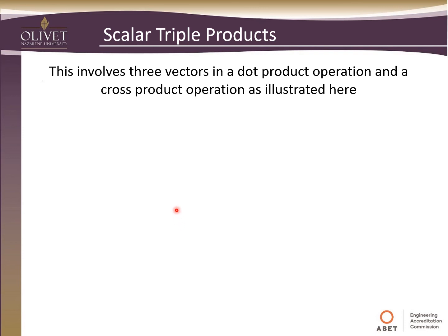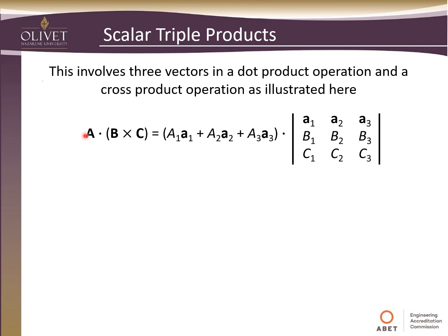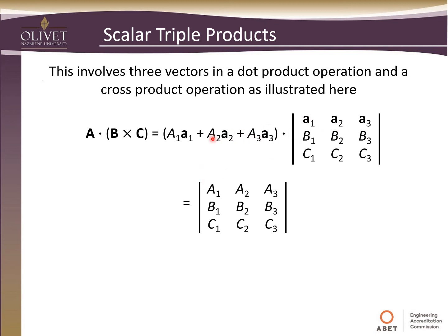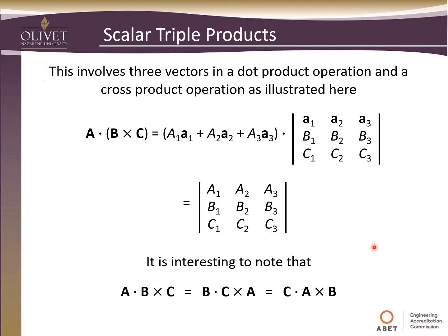Finally, we want to look at the scalar triple product, which involves three vectors in a dot product and a cross product operation: A dot (B cross C). We can write B cross C as a determinant array, and then replace the top-row unit vectors with the scalar magnitudes of A for the dot product operation, since A1 dot A1 = 1, A2 dot A2 = 1, and so forth. Interestingly, A dot (B cross C) equals B dot (C cross A) equals C dot (A cross B) — you can shift this around cyclically.